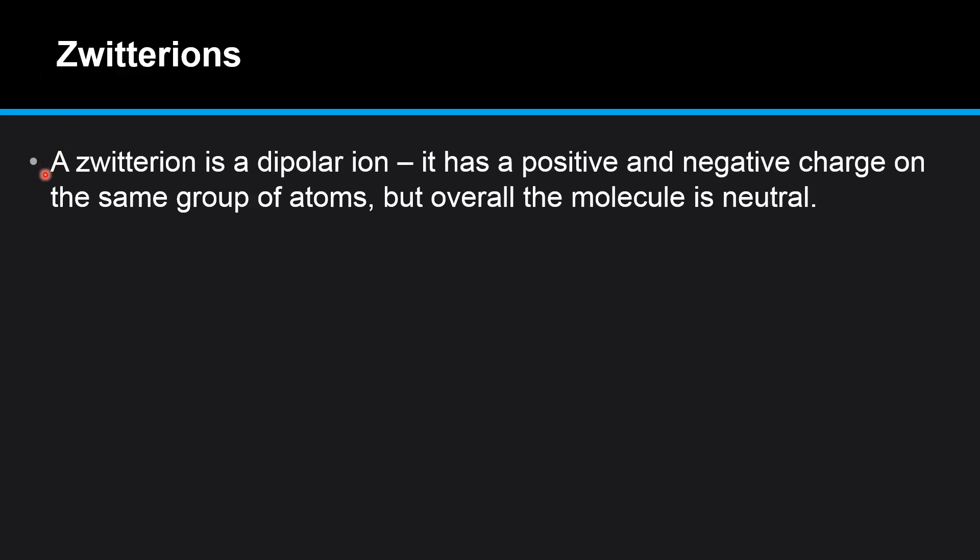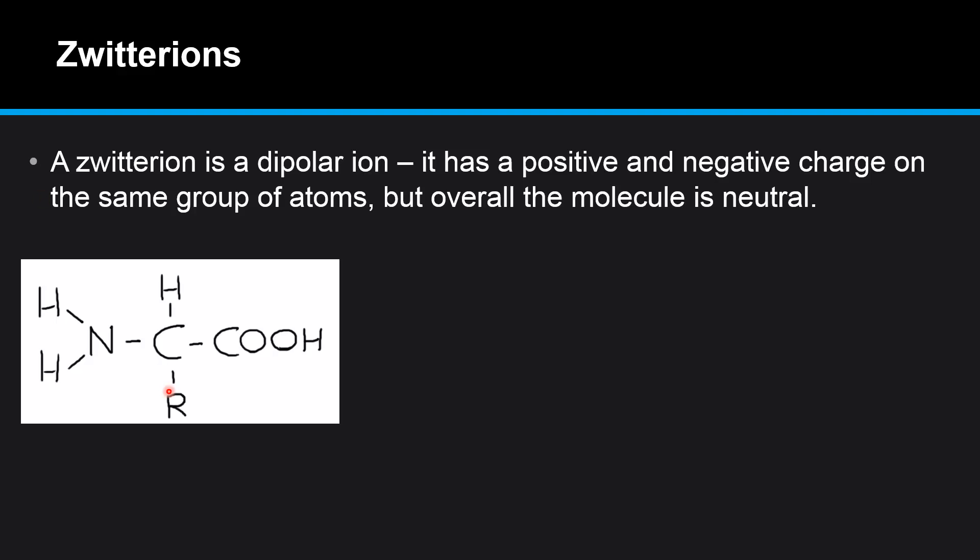So we'll start by looking at zwitterions. A zwitterion is a dipolar ion. It has a positive and negative charge on the same group of atoms but overall the molecule is neutral. So we start with a structure of a typical amino acid. We have the amino group here and the carboxyl group here and the R group which is different for every amino acid.